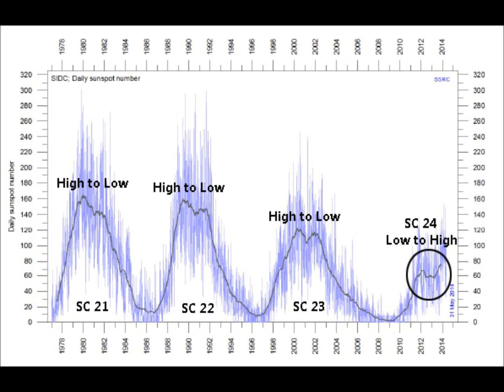Good afternoon everyone. Today I would like to talk about how solar cycle 24 started with an initial peak and then has a higher secondary peak, which is the opposite of most solar cycles — except for solar cycle 5 and solar cycle 12, which both ushered in cold eras following the secondary peak.